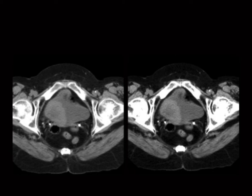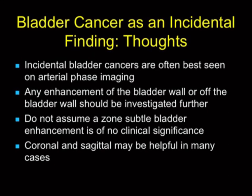Bladder cancers are not uncommon in older patients and can be incidental. Small ones — not five centimeter masses, I'm talking one centimeter or even less — are best seen on arterial phase imaging. We now do so much arterial phase imaging and give water as oral contrast so the bladder is distended. It's important to recognize that any enhancement of the bladder wall should be investigated further — you have to assume it's a cancer. Focal enhancement of the bladder wall is never normal.